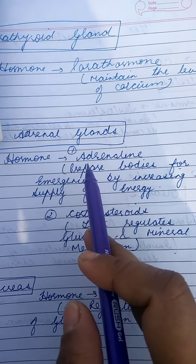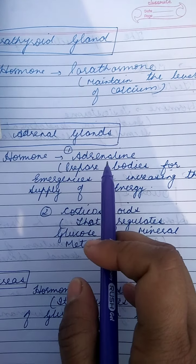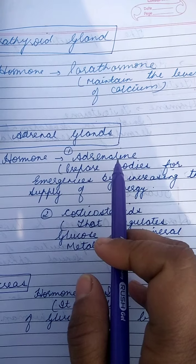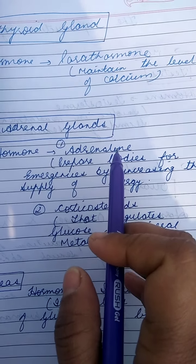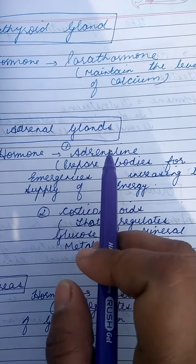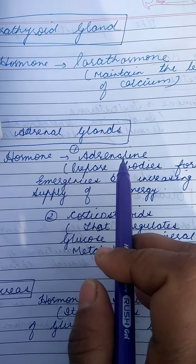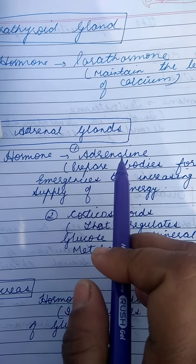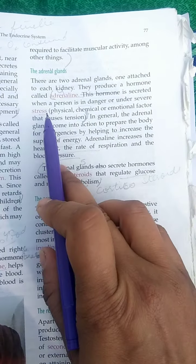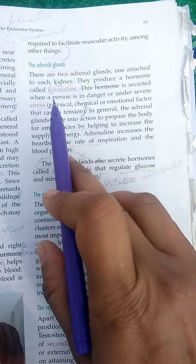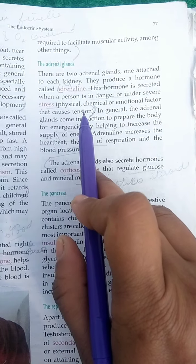The function of adrenaline is that it prepares the body for emergency by increasing the supply of energy. When it is secreted, the heartbeat increases and the rate of respiration also increases. Especially in the examination center when you are feeling anxiety, that is due to the secretion of adrenaline. This hormone is secreted when a person is in danger or under severe stress — physical stress, chemical stress, or emotional factors that cause tension.